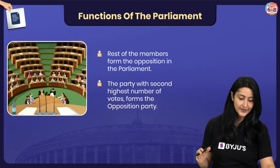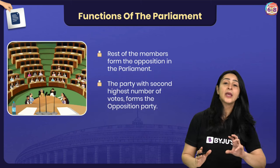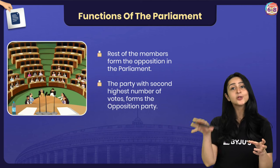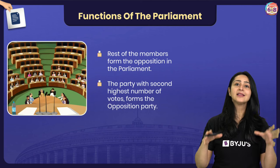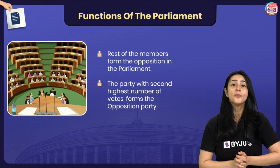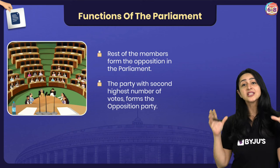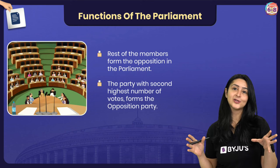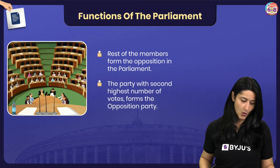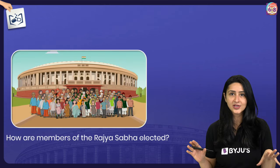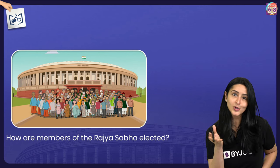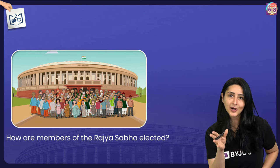Apart from the ruling party, the rest of the members in the Lok Sabha form the opposition in the Parliament. The largest party among these is called the opposition party.